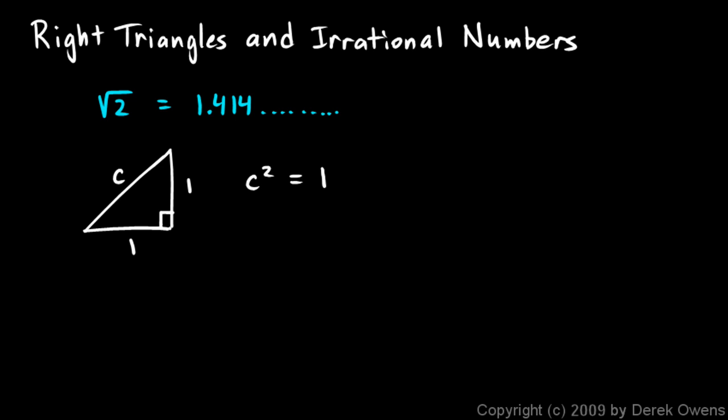The Pythagorean theorem says that c squared has to be 1 squared plus 1 squared, and that's obviously 1 plus 1, which is 2. So c squared is equal to 2. So if we take the square root of each side, we know that c is equal to the square root of 2.